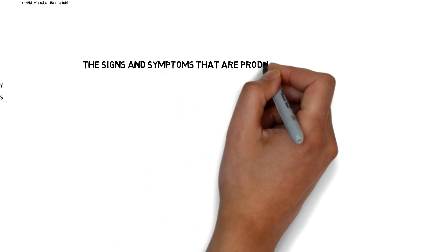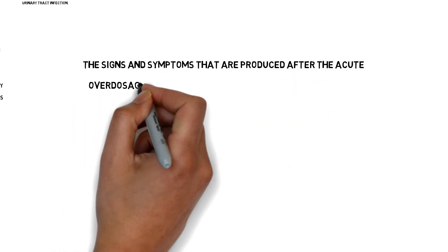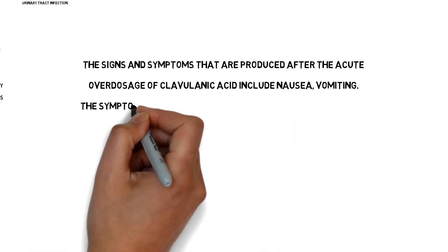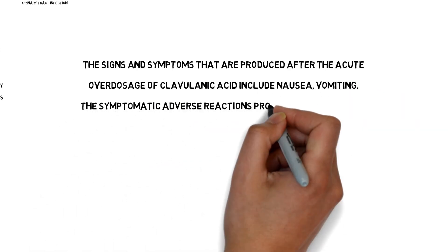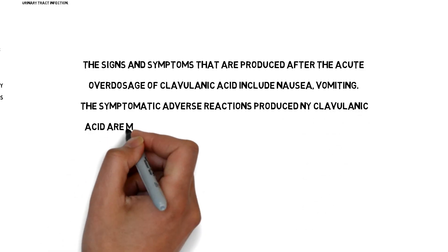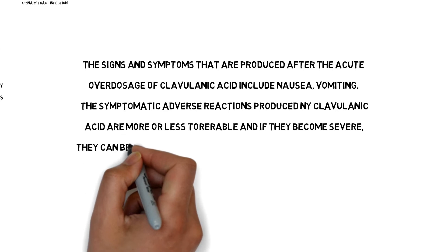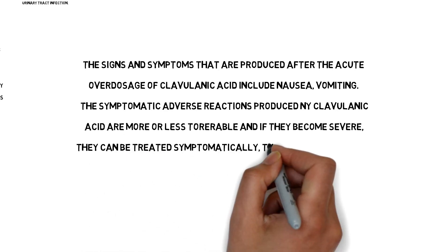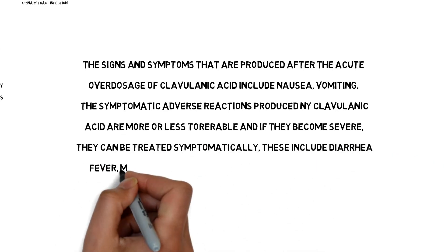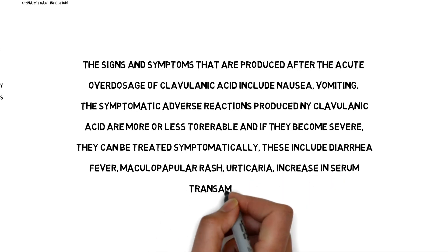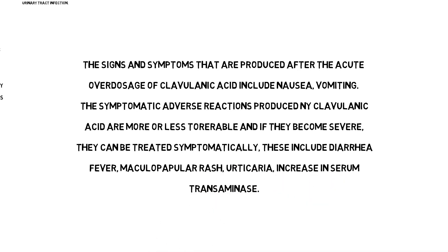The signs and symptoms produced after acute dosage of clavulanic acid include nausea and vomiting. The symptomatic adverse reactions produced by clavulanic acid are more or less tolerable, but if they become severe they can be treated symptomatically. These include diarrhea, fever, maculopapular rash, urticaria, and increase in serum transaminases.